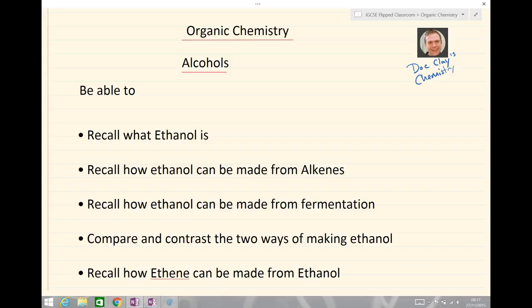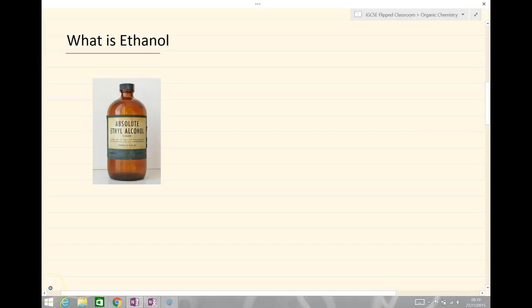So what is ethanol? Well you might be able to work it out by its old name. It used to be called ethyl alcohol. Ethyl tells us there's two carbons, there's an alcohol group which is OH.